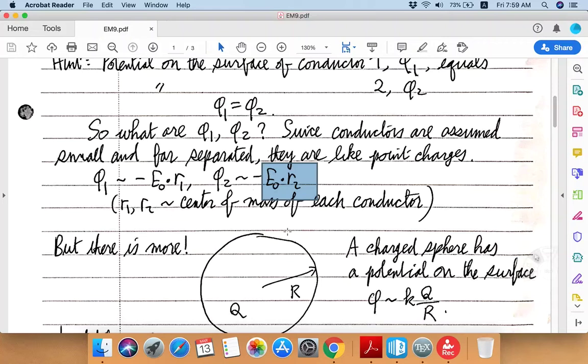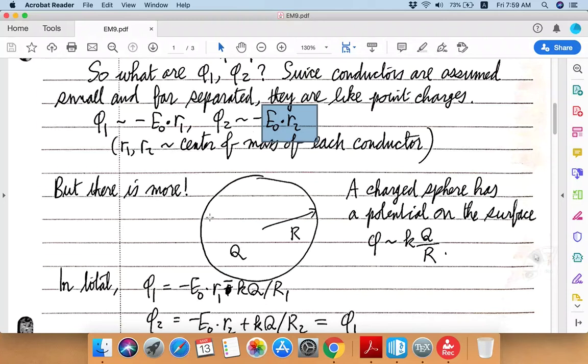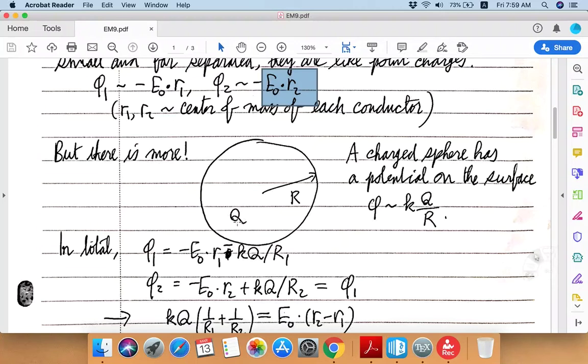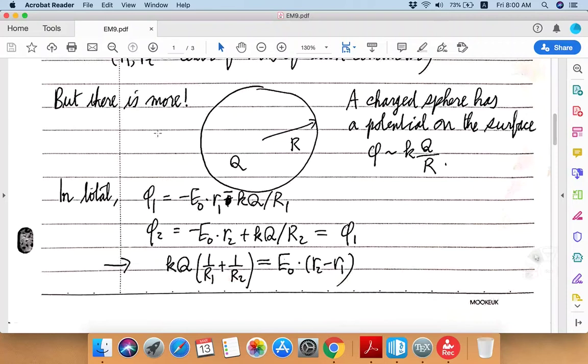However, that's not all, because remember this is also a sphere, so a spherical shaped conductor with a total charge Q sitting on it has the potential equal to this form.